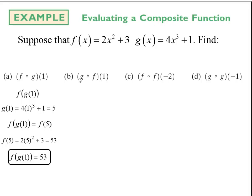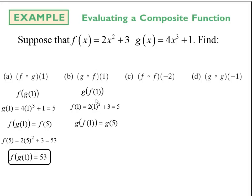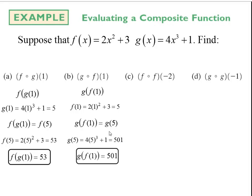Letter B says take g composed with f at 1. First we find f at 1 by plugging 1 into the f function, which gives me 5. Then I take f at 1, which is 5, and evaluate g at 5 — plugging 5 into the g function — and that gives me 501. So g composed with f at 1 is 501.